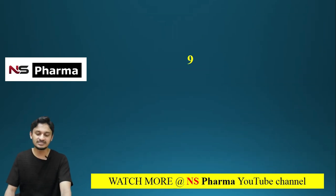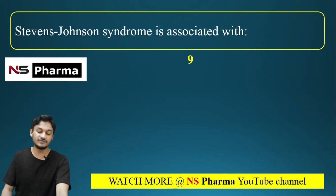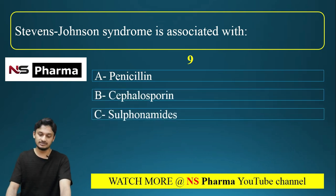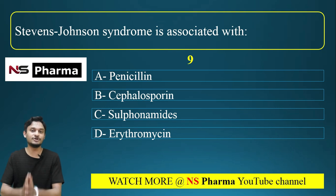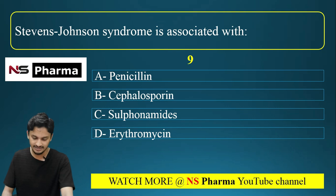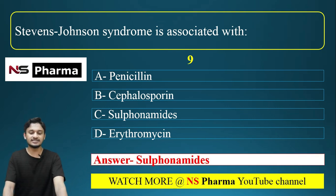Question number nine: Stevens-Johnson syndrome is associated with — penicillin, cephalosporin, sulfonamides, or erythromycin? Stevens-Johnson syndrome is a known adverse effect. The correct answer is sulfonamides. Sulfonamides cause Stevens-Johnson syndrome.